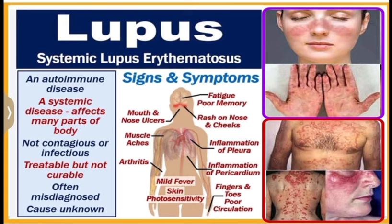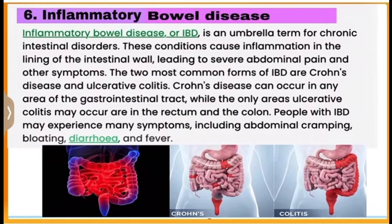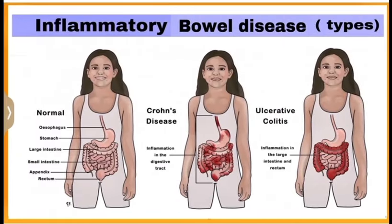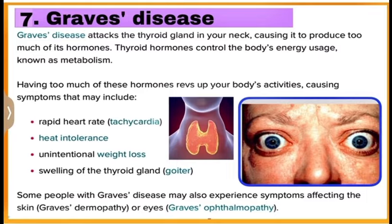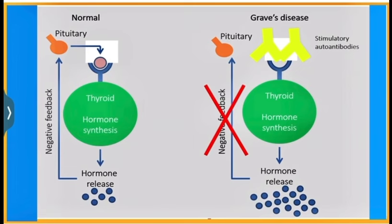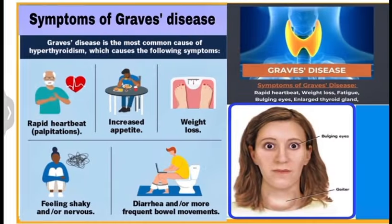Number six: inflammatory bowel disease and its types. Number seven: Graves disease, including how it affects the working of the pituitary and thyroid gland, and its symptoms.